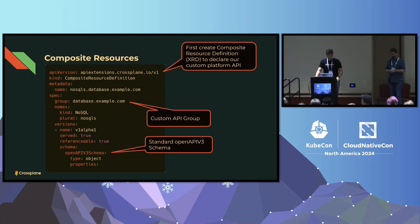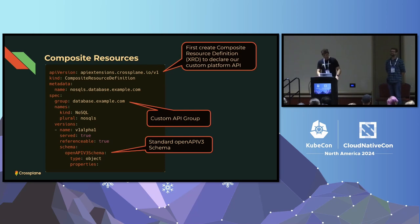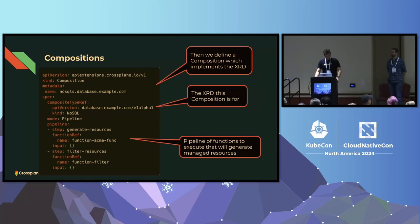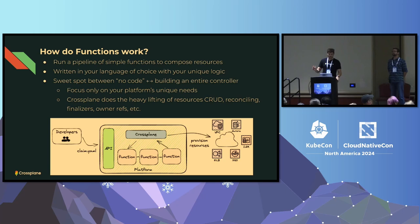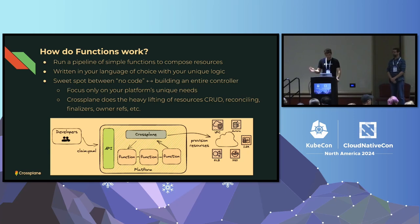The XRD — the composite resource definition — can be relatively verbose and long, and there's work we want to do to make this easier. The composition has a pipeline of functions that are running, generating the managed resources that will be created in the cloud. Functions are a big thing in Crossplane — they're now fully mature. You can run a simple pipeline of functions to compose your resources. You write them in the language of your choice, include your logic, and it's a sweet spot between no code and building an entire controller. You focus on what your platform needs, and Crossplane handles the reconciling and CRUD operations.